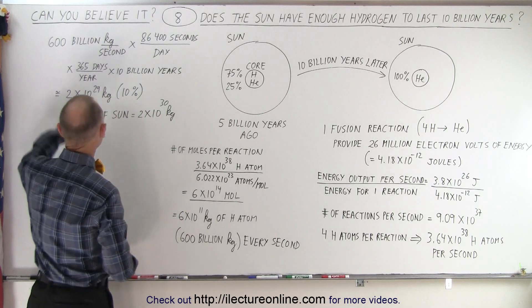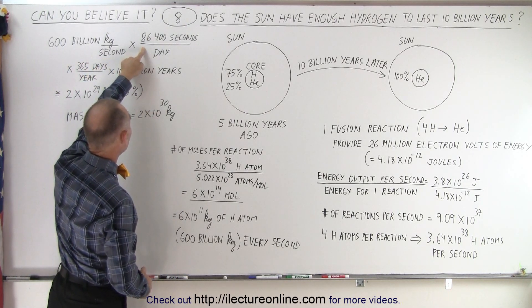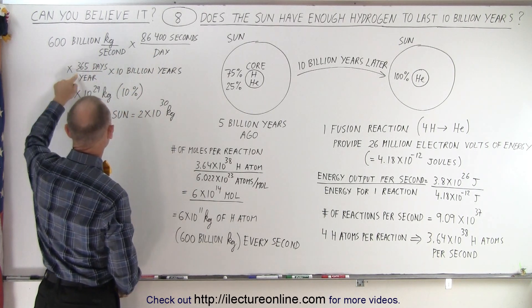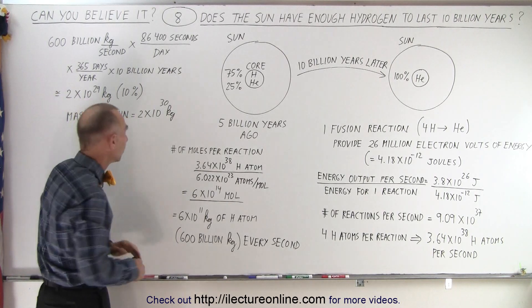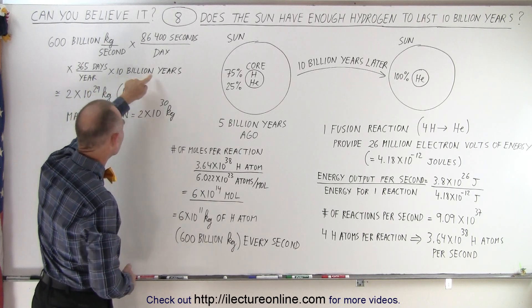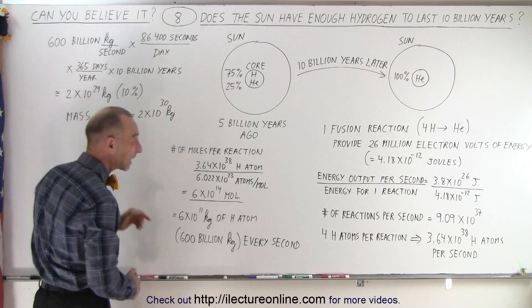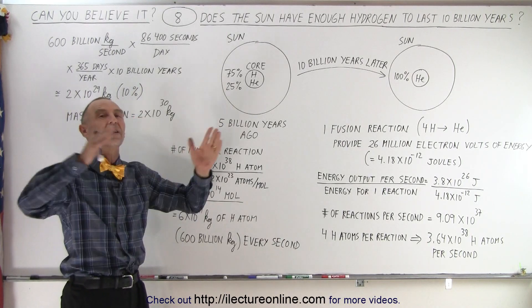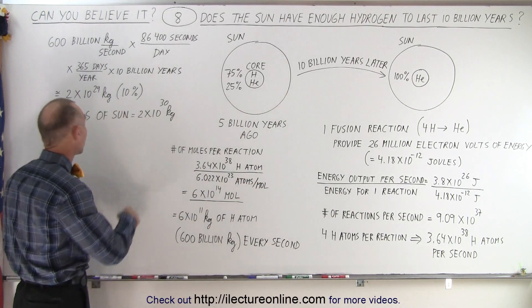Well, we take 600 billion kilograms per second, and we know there's 86,400 seconds in a day, so we multiply that, and then there's 365 days in a year. It's actually 365 and a quarter, but we'll take 365 days in a year, and we multiply that again times 10 billion years, and that means that 2 times 10 to the 29 kilograms of hydrogen will be converted to helium over the life cycle, or the entire lifespan of the Sun, 10 billion years.